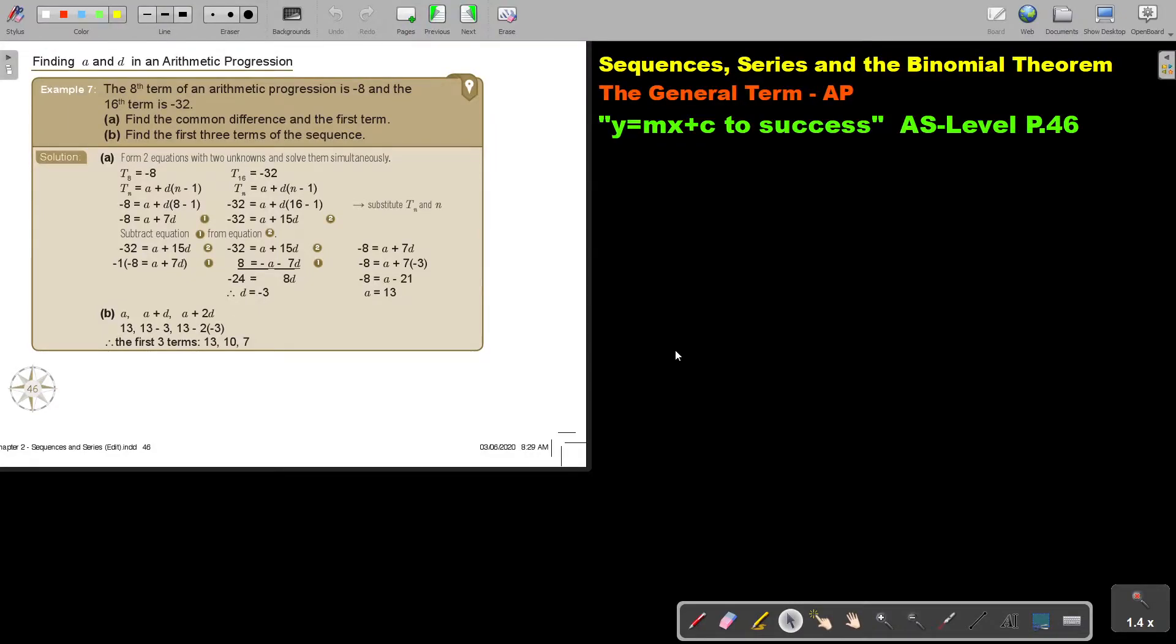In this video, we are going to continue with the general term of an AP. You will find this on page 46 in the Namibia AS Level Mathematics textbook Y equals MX plus C to success.